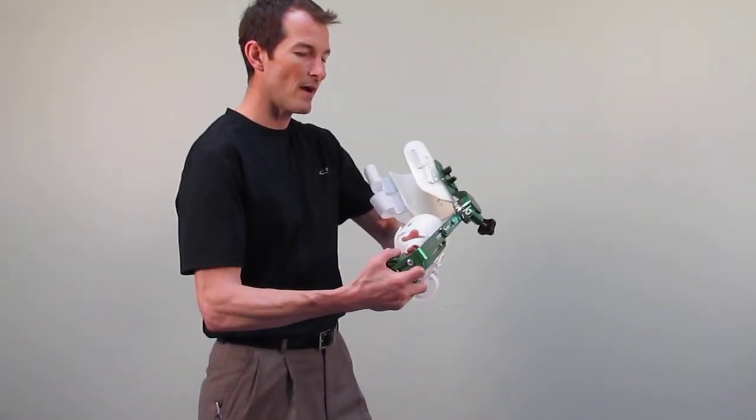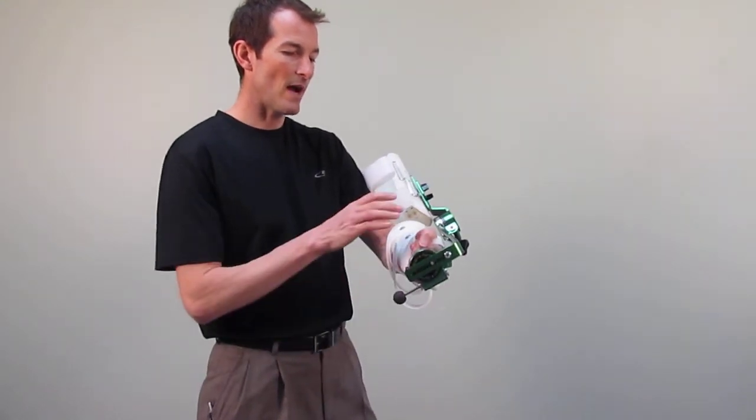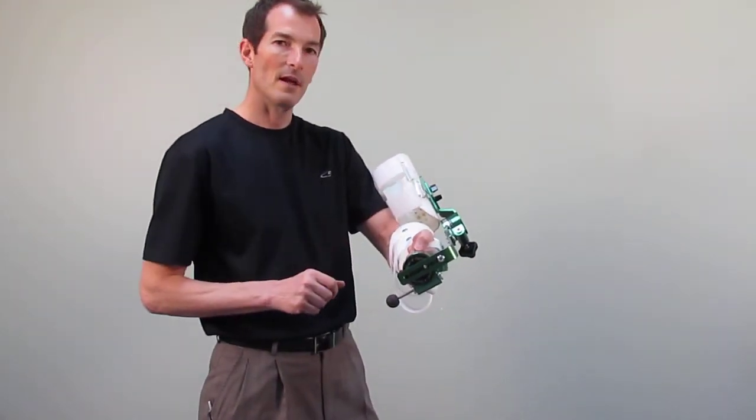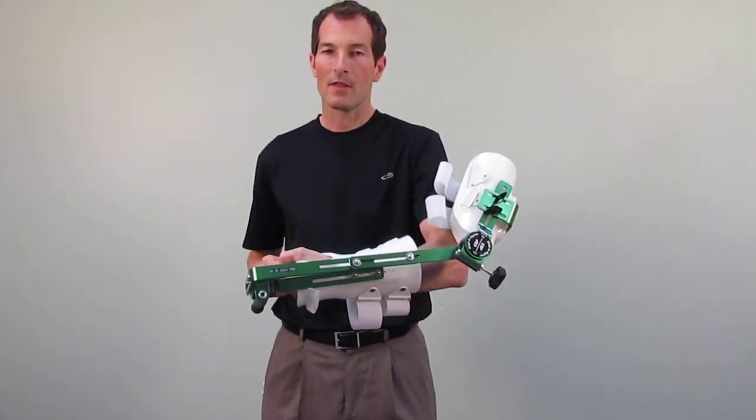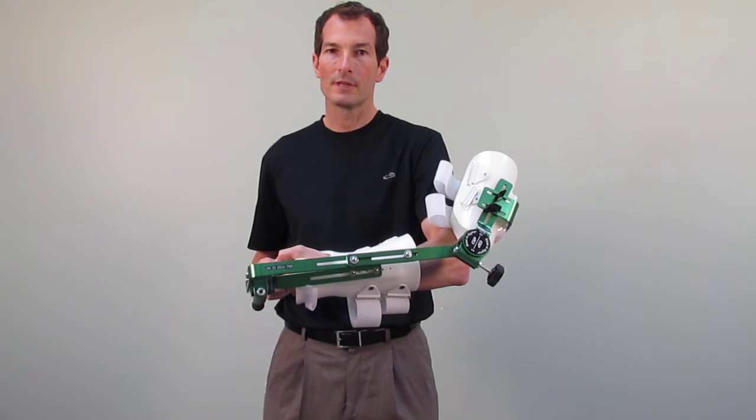In order to don the device, we would encourage the patient to grab the distal forearm cuff and that way the product can be held in place. Once this length is appropriate on the patient, the Phillips head screws can then be tightened.